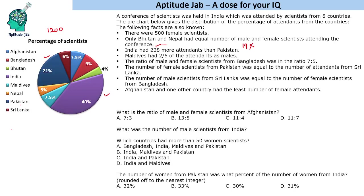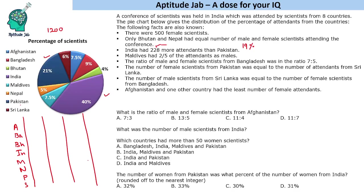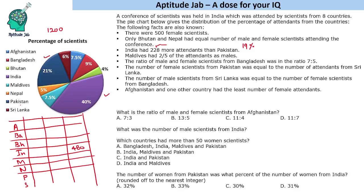We will make a table with the country, and the number of male and female scientists from each country: Afghanistan, Bangladesh, Bhutan, India, Maldives, Nepal, Pakistan, and Sri Lanka. We will fill in male, female, and total columns. India has a 40% contribution, which means 480 scientists, and Pakistan has 21% — that is 252 scientists.